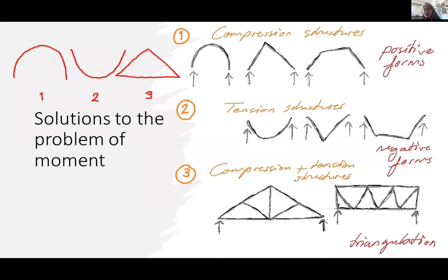Here is a schematic explanation of the solutions. Rather than memorizing structural types, knowing the solution schematically is valuable. The first solution is to have a positive form — curving downwards. The second solution is to have a negative form — looking upwards. The third solution is triangulation. It is very much related to form: if we have this type of approach, the stress type changes — bending moment transforms into either tension or compression.